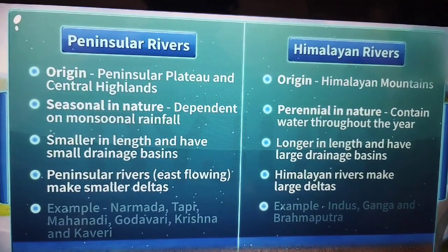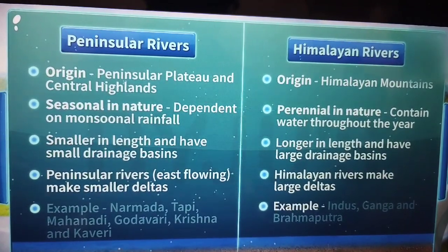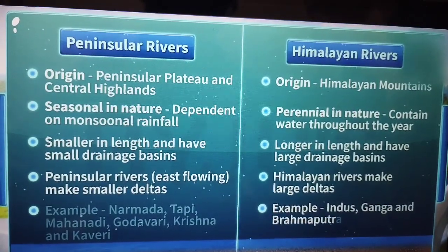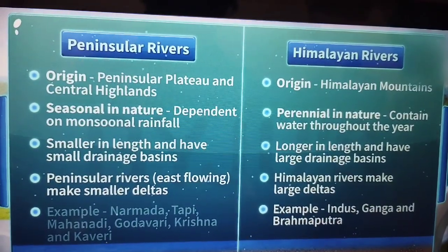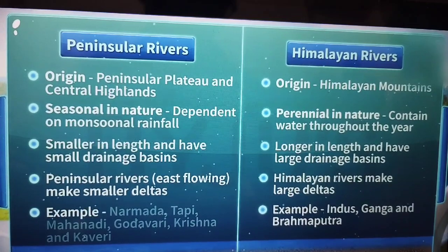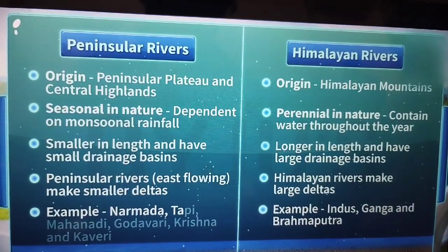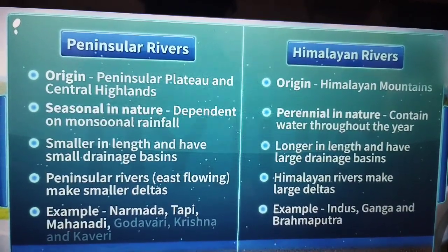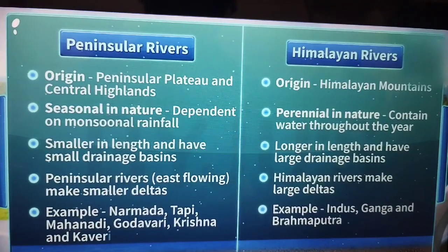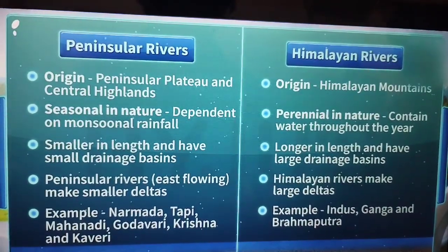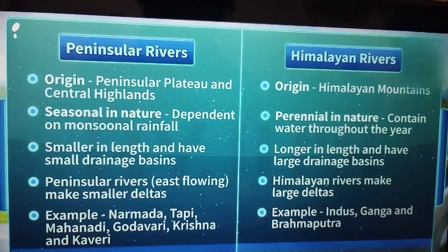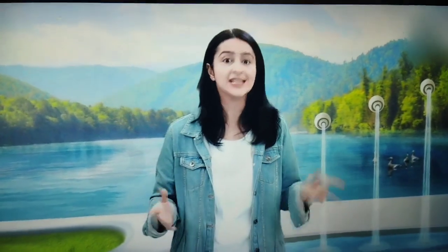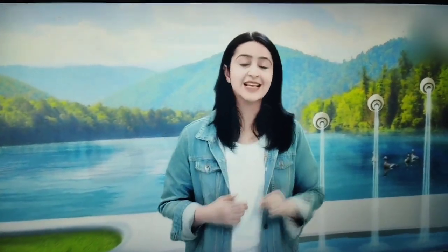Some examples of the Himalayan rivers are the Indus, the Ganga, and the Brahmaputra. Some examples of peninsular rivers are the Narmada, the Tapi, the Mahanadi, the Godavari, the Krishna, and the Kaveri. The Himalayan and the peninsular rivers vary on the basis of several aspects, and yet both these kinds of rivers act as lifelines for India.